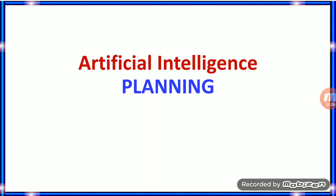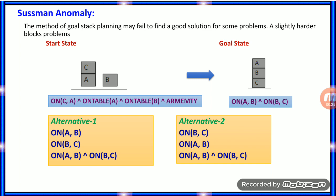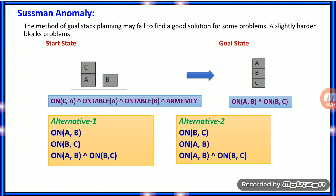Welcome to Modular Classroom. Today in the artificial intelligence series on planning, we are going to see the Sussman Anomaly. As we saw in the last video, goal stack planning may fail to find a good solution for some problems. Slightly harder block problems cannot be dealt with by goal stack planning — that is where the Sussman Anomaly algorithm comes in. The start state is: on(C, A), on_table(A), on_table(B), and arm empty.